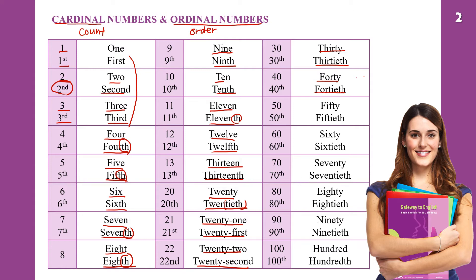Then 44 and 44th, 50 and 50th, 60, 70, 80, then 90 and 90th, 91 and 91st, 92 and 92nd, 93 and 93rd, 94 and 94th, up to 100 and the 100th.